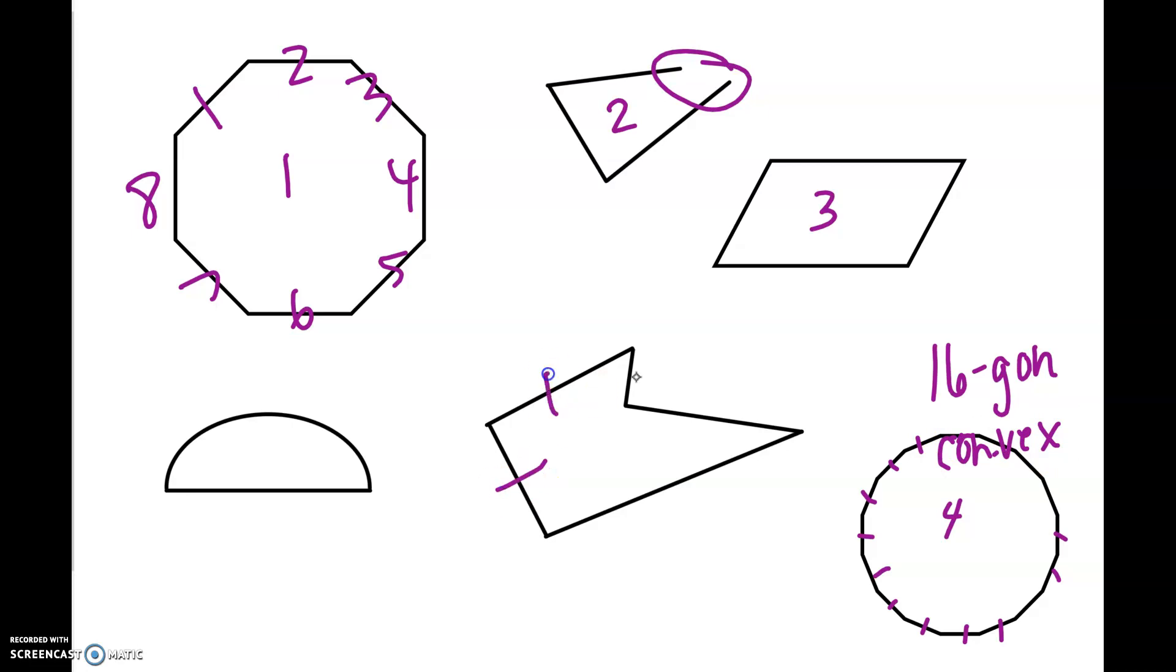Alright. This one, is it a polygon? Yes, it is. So we've got one, two, three, four, five sides. So this is a pentagon. And this one is concave. When I have this side, those points go in the interior, these points right here. So that is concave.